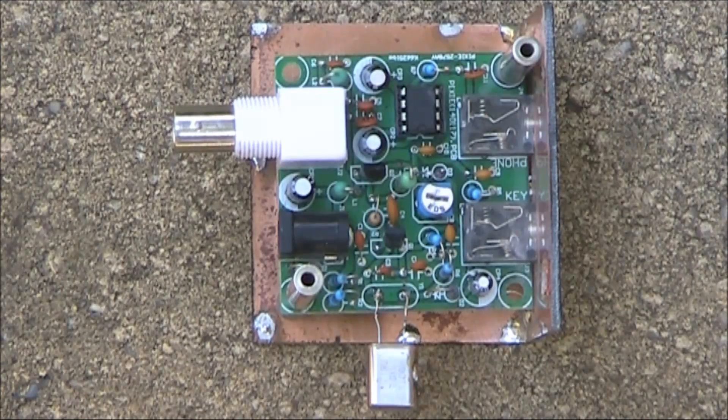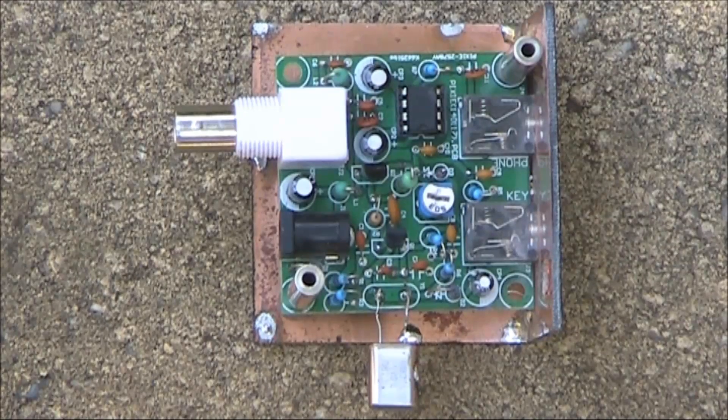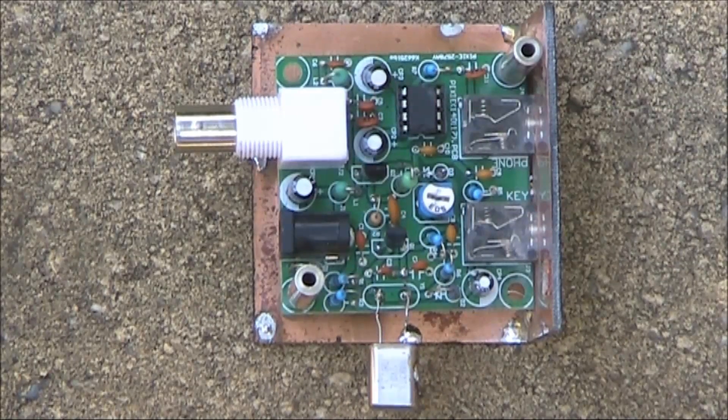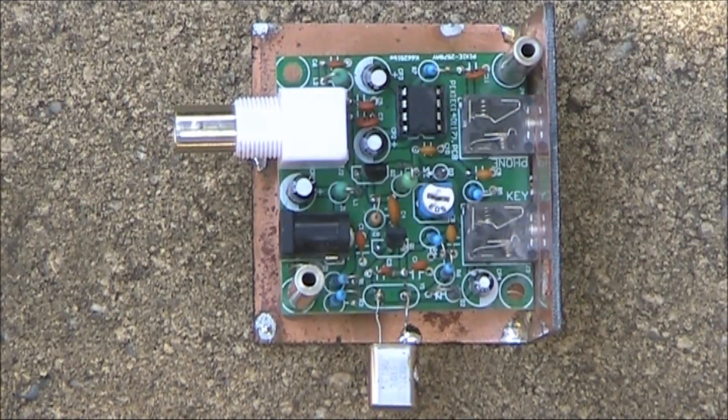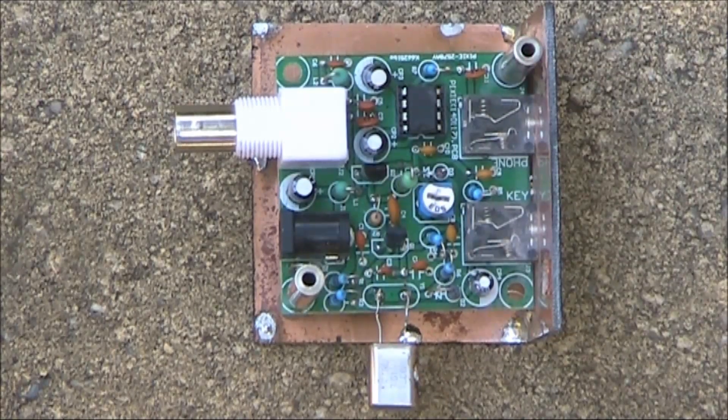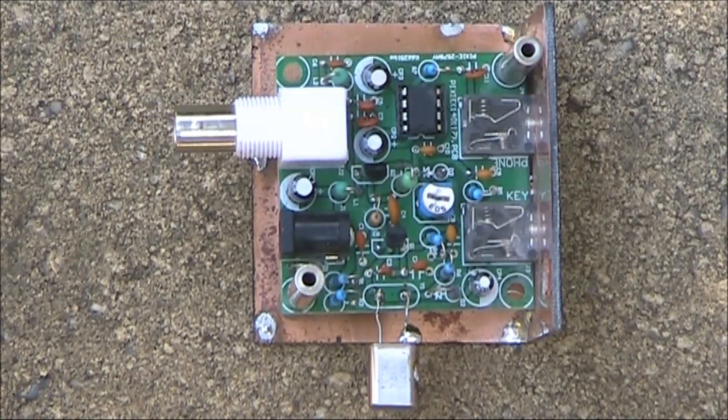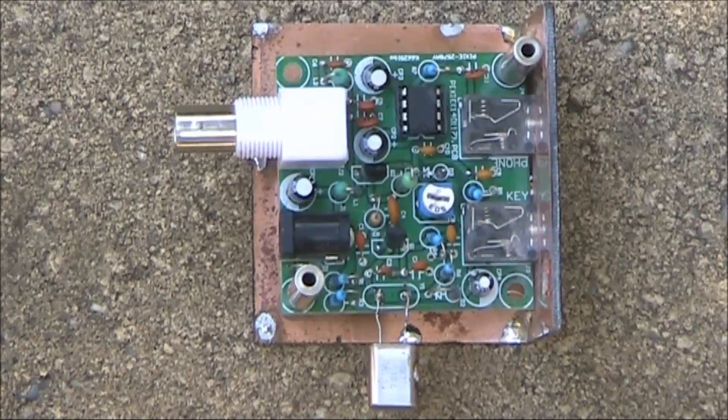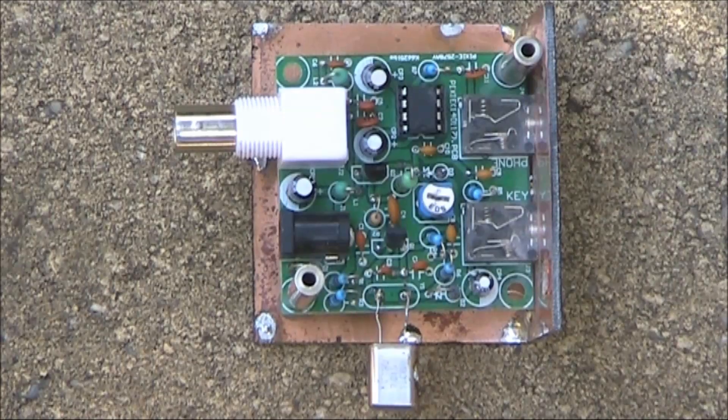The Pixi transceiver is an appalling kit to use on the air. It's crystal controlled, meaning you can't dodge QRM or call stations on their frequency. It's low power, making it hard for people to find your signal amongst the noise. And its receiver front end is terrible, meaning you'll often get overload from shortwave or local broadcast stations.